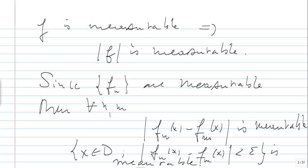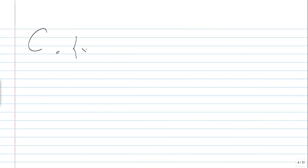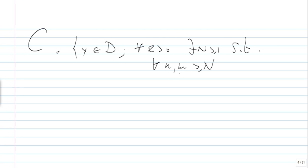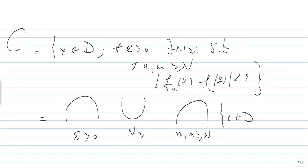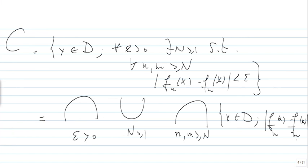So C is exactly the set of x in D such that for every epsilon, there exists an N, such that for every n and m greater than N, we have |F_n(x) - F_m(x)| < epsilon. This is exactly the intersection over epsilon, because it is for every epsilon; then the union over N, because there exists an N; and the intersection over all n and m greater than N of the set of x in D such that |F_n(x) - F_m(x)| < epsilon.